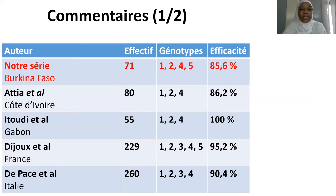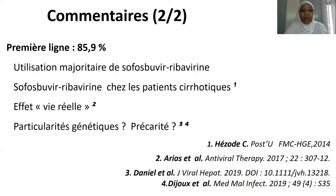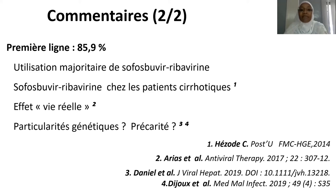Nous avons obtenu un taux d'efficacité de 86%, comparable à celui rapporté par ATIA en Côte d'Ivoire, mais qui reste modeste pour un traitement antiviral direct. Ce taux modeste ainsi que l'influence négative de la cirrhose peuvent s'expliquer par l'utilisation majoritaire du protocole sofosbuvir-ribavirine, qui a une efficacité suboptimale influencée par le stade de fibrose. Certains auteurs ont évoqué des taux de guérison moins bons en vie réelle que dans les essais cliniques. Enfin, on peut évoquer l'implication de facteurs génétiques : une grande série américaine de plus de 15 000 vétérans rapporte une moins bonne efficacité chez les patients afro-américains, et dans un centre français, une efficacité moindre a été rapportée chez les sujets originaires d'Afrique subsaharienne.